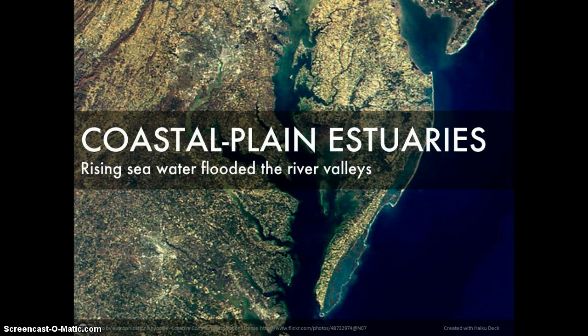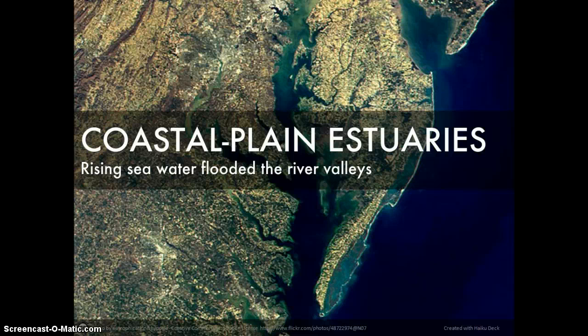Coastal plain estuaries were formed at the end of the last ice age, when rising sea water flooded the existing river valleys. The Chesapeake Bay is an example of this type of estuary.